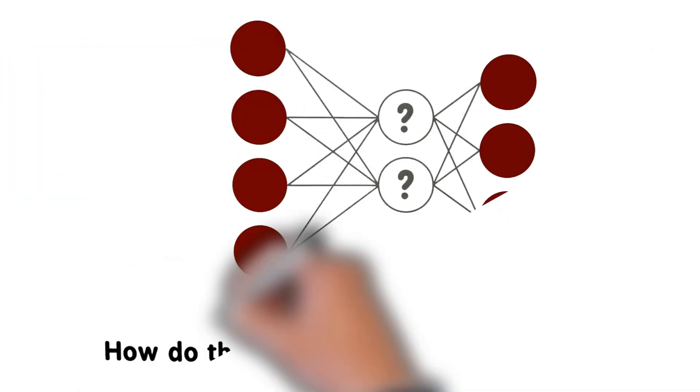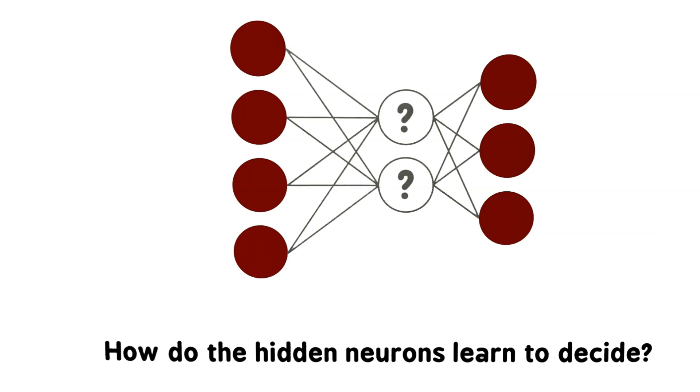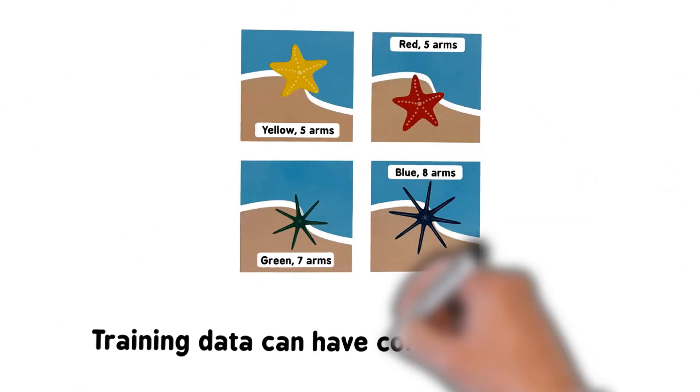How do the hidden neurons learn to decide? Training data can have correct labels on them.